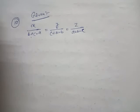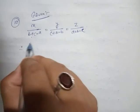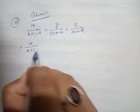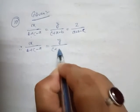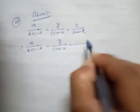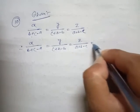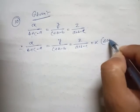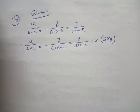Now, students, after that I will introduce one ratio here, say k. So: x by (b plus c minus a) equal to y by (c plus a minus b) equal to z by (a plus b minus c) equal to k.